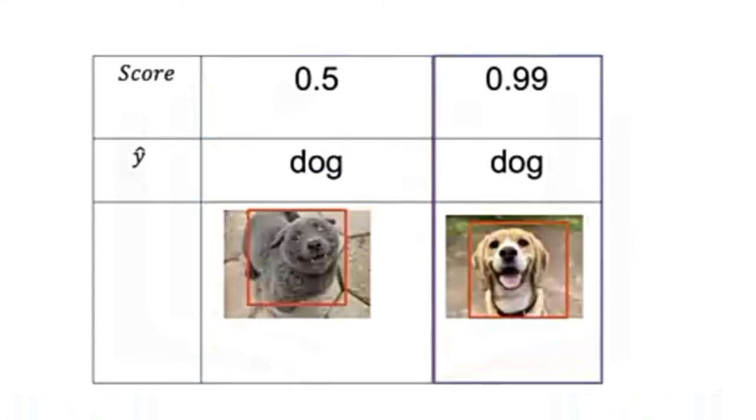For the second row, we see the prediction is dog and the image looks like a dog. As a result, the score is 0.99 in this case. The model is confident about its prediction.